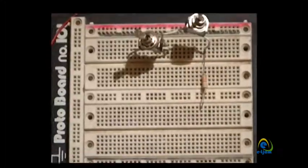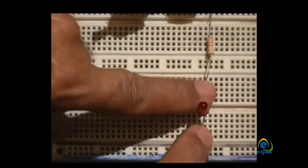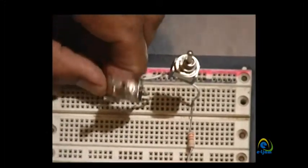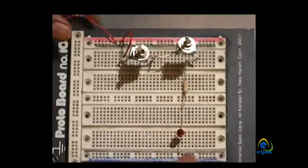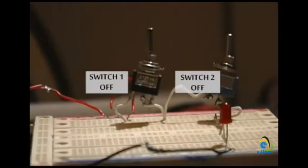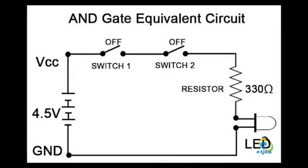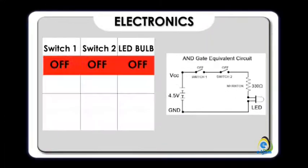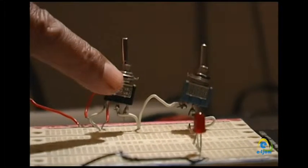Complete the circuit by connecting a resistor, LED or bulb in series with the switches. Connect the power supply. Step one: turn off switches one and two and see if the LED or bulb is on — it will be off. Insert the values in the first row of the table.